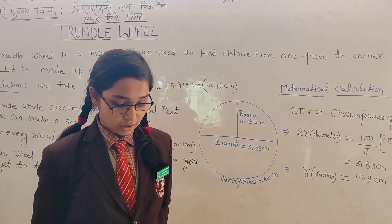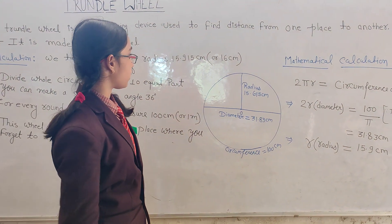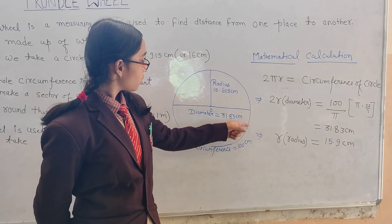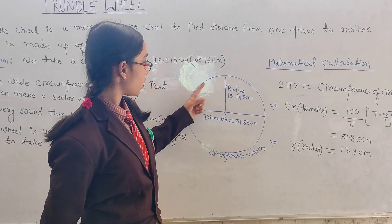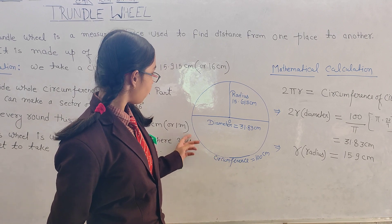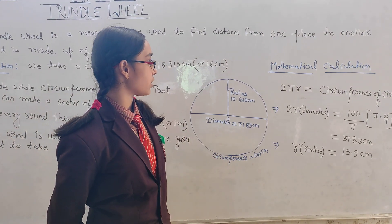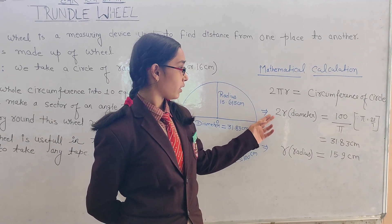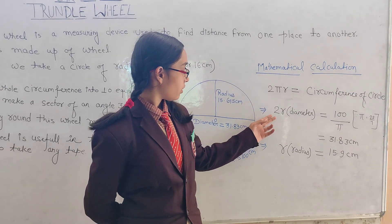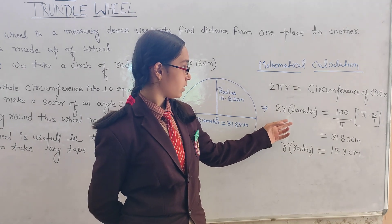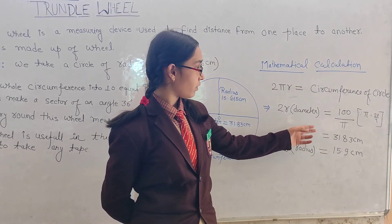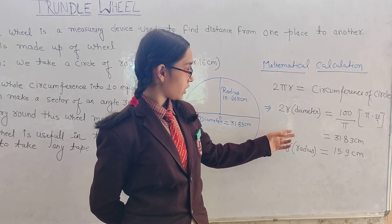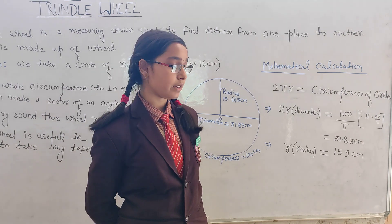We take a radius of a circle in the key coordinate direction. From this calculation, we know that the circumference of a circle — the curved part — is given by the formula 2 pi r. By this equation, we find that 2r, the diameter of a circle, is equal to 100 by 5. We know that the value of pi is 22 by 7, and by this calculation, we get the diameter of a circle as 31.83 cm.